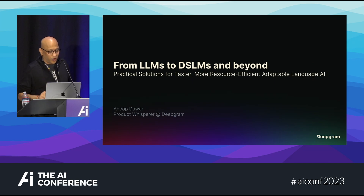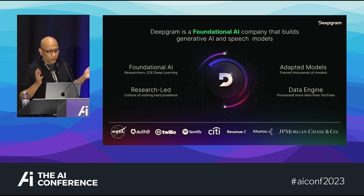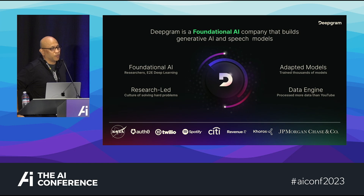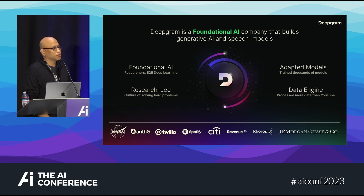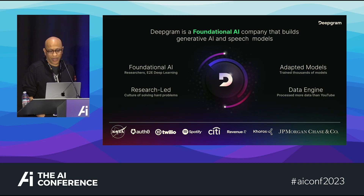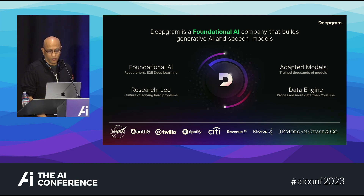My name is Anub Daur. I do product at DeepGram. DeepGram is a foundational AI company that builds generative AI and speech models. It was founded a long time ago before all the GPT mania took over — one of the first to use deep learning for speech-to-text, making it the fastest and most accurate speech-to-text system on the planet, adapted for customer and specific use cases all over the world.